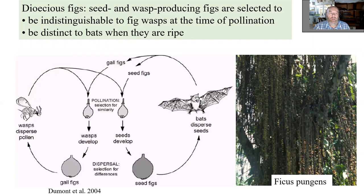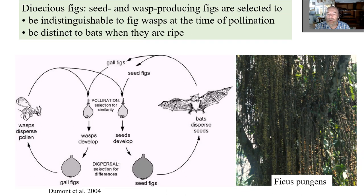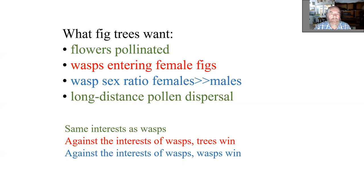Gynodioecious figs have two types of fruits, and only one should be eaten by frugivores, so they have very different sugar content. The fig does not want fig wasps to tell the difference between seed fig and pollen fig, but it actually wants frugivores to be able to tell the difference — and they do. When you see a fig tree in the forest with a pile of uneaten fruits below it, you can be pretty sure this is the pollen-producing male fig tree, where the fruits have released their fig wasps and are no longer attractive because of their low sugar content.